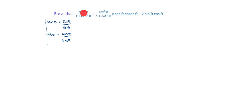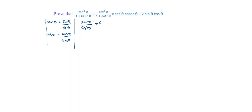Instead of tanθ, we will write sinθ / cosθ. Instead of cotθ, we will write cosθ / sinθ. So the first term, tan³θ, becomes sin³θ / cos³θ, plus cos³θ / sin³θ, divided by 1 plus tan²θ.